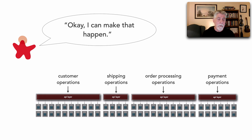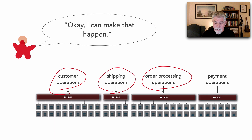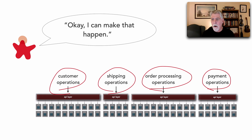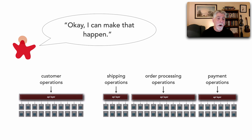Here is the architecture using microservices for that order system. We have customer operations and a whole lot of services, shipping operations, order processing operations to handle pick and pack and returns, and payment operations supporting different payment methods like credit cards and gift cards. Customers must be able to always place an order — that part needs high availability, five nines. But all the rest of the processing can have standard three nines commodity-based availability. This divide-and-conquer approach made that requirement feasible.